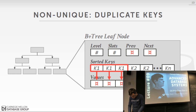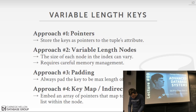For variable-length keys — since people index on strings all the time — there are essentially four approaches. The first is to not store the key in the index at all, just store a pointer to the tuple and find the key from there. This keeps pointers at fixed 64-bit length, but you'll have poor cache locality because every key comparison requires fetching the tuple from a random memory location. Nobody does this. The second approach is variable-length nodes, but then you can't easily reuse objects in memory pools. Nobody does this either.